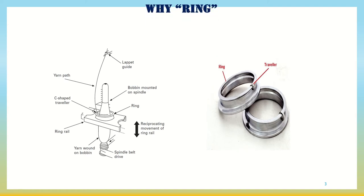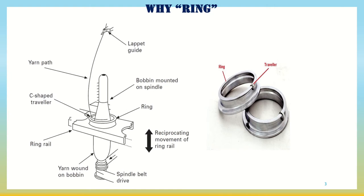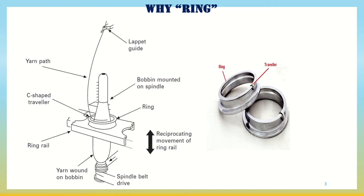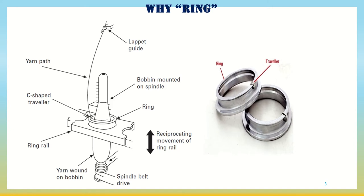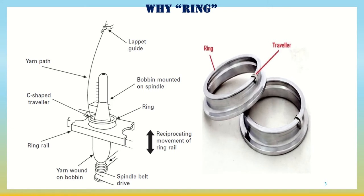Why is it called ring spinning? The name of any spinning machine is derived from its twisting mechanism in relation to the special elements used for twist insertion. In the ring spinning machine, the ring along with the traveler is responsible for twist insertion within the fiber strand, so it is called ring spinning.